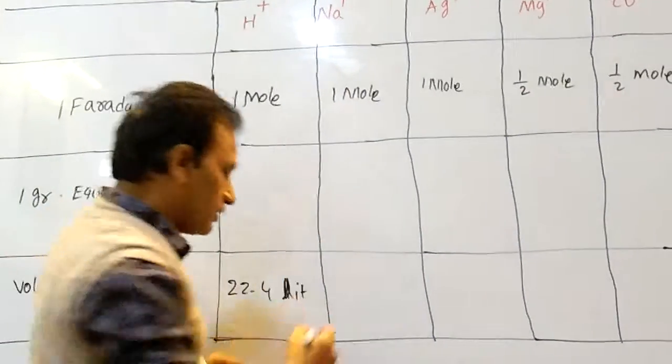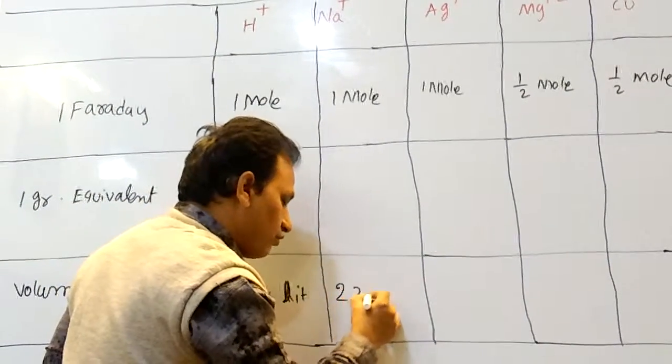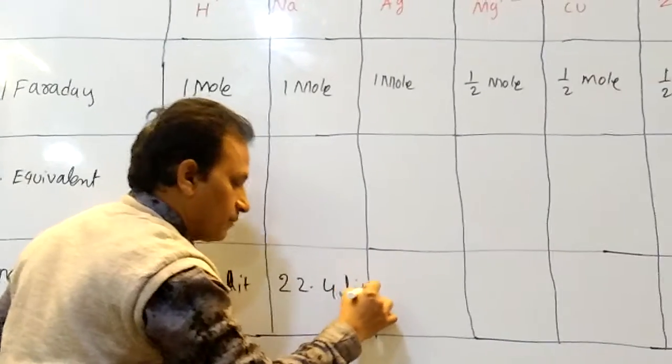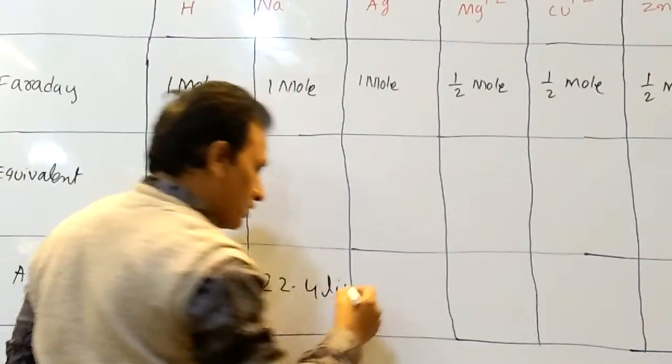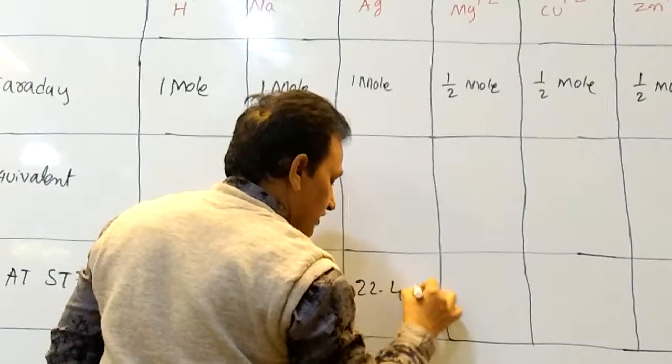Here, one mole means also 22.4 liters occupied. Here also one mole, one mole means 22.4 liters.